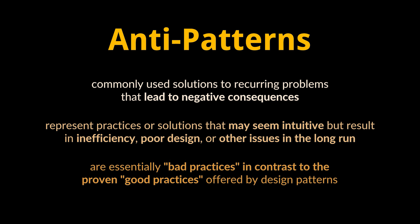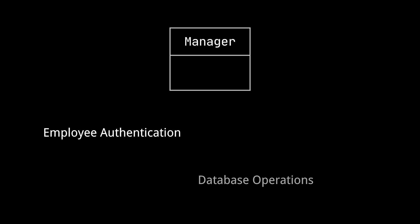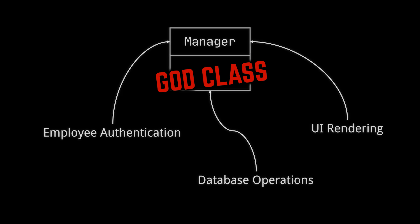As a quick example, suppose we have a manager class and several functionalities we need implemented — these could range from employee authentication to database operations to UI rendering, and so on. Every time we add one of these functionalities, it looks like it belongs to that manager class, and coupling all these functionalities to this single object will result in what we call a God class, which is an anti-pattern.